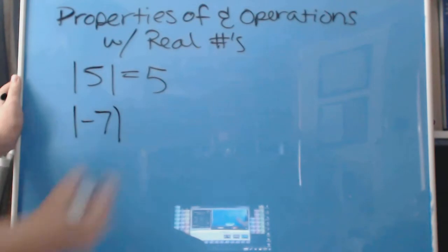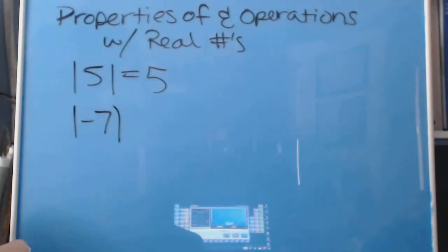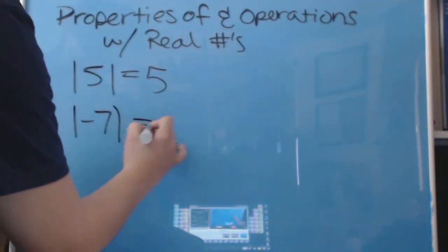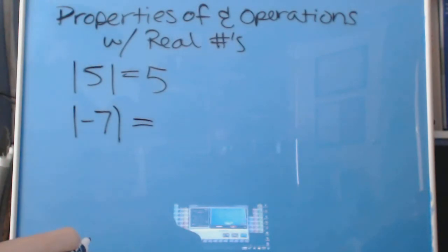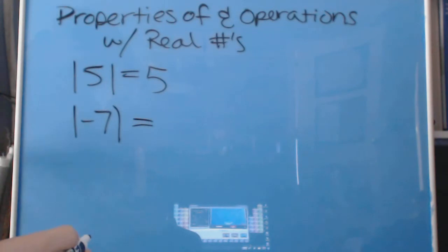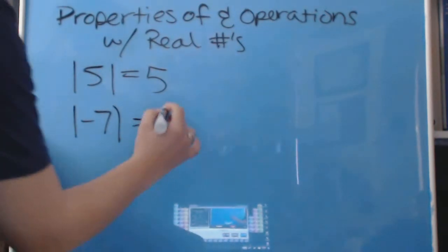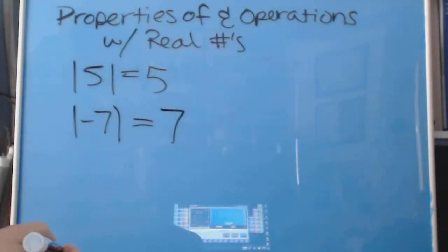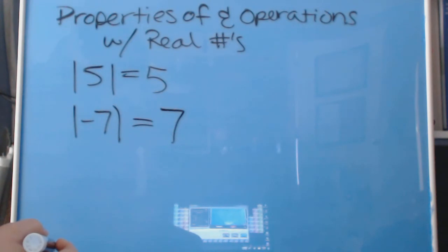The absolute value of negative 7 — what does that actually equate to? Well, that's 7. Easy.